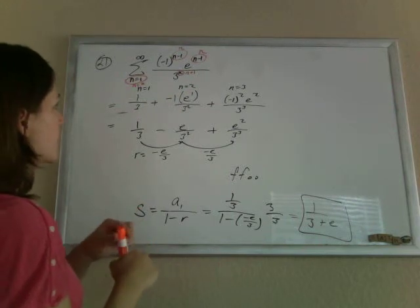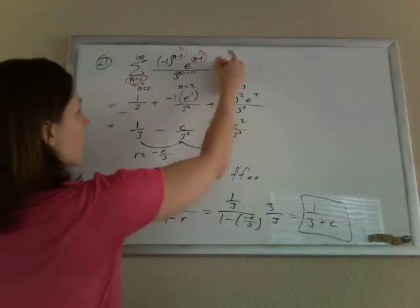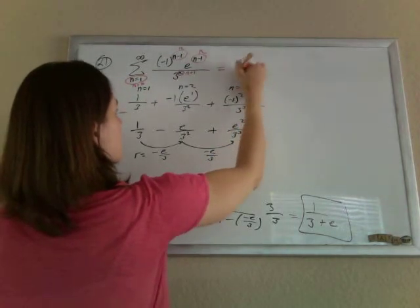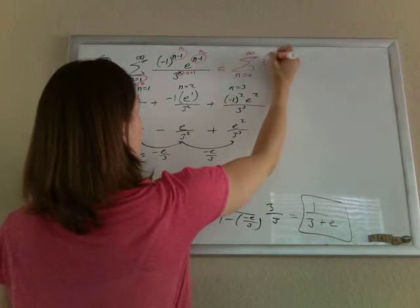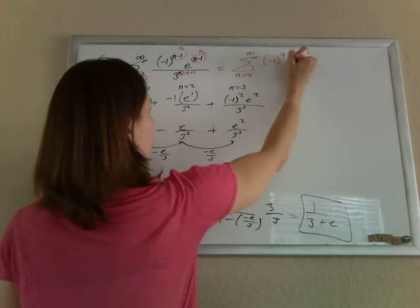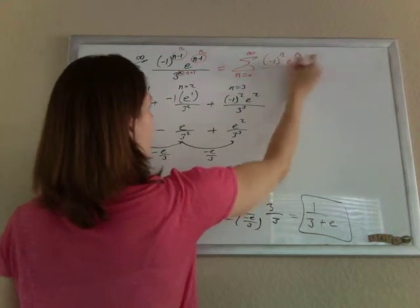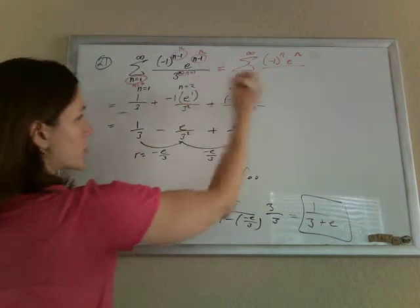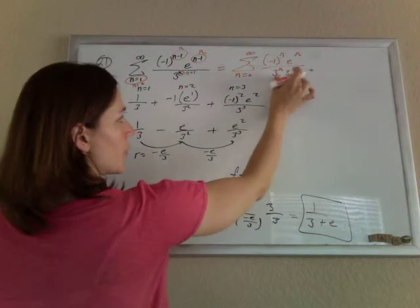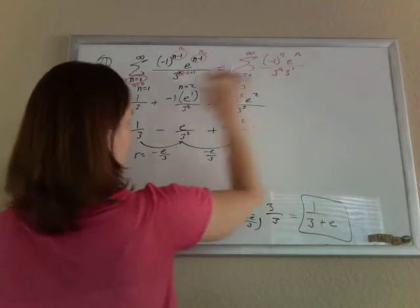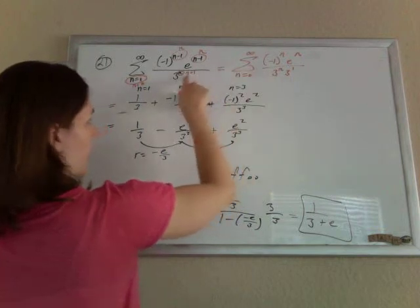And the reason we do this is because now we can rewrite this as n equals 0 to infinity of negative 1 to the n, e to the n, and 3 to the n plus 1 is the same thing as 3 to the n times 3 to the 1. Multiplying things with the same base, you can add the exponents. So here we're just going backwards.